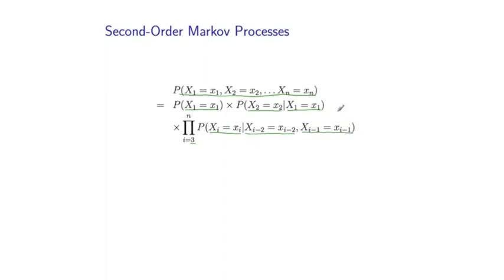So remember, in a first-order Markov process, we would have had this term alone being conditioned on. We now also add the term two positions back. So this, in a sense, is a slightly more powerful model in that it can capture a broader class of distributions. We're conditioning on a little bit more information. But we're essentially just conditioning on the previous two elements in the sequence rather than the previous one.